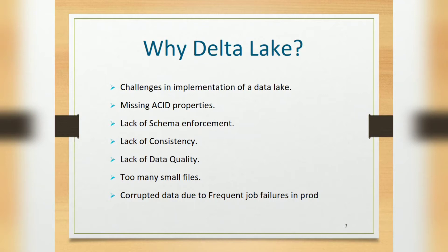In big data, a major drawback is data quality — we don't have constraints. Delta Lake provides two constraints: NOT NULL and CHECK constraint, as well as consistency. Also, managing huge data with a large number of small files across hierarchical folders and partitions makes it very difficult to fetch data, impacting performance.